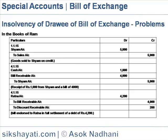In the books of Ram, the entry would be: on 1st January, Sam account debit to Sales account — goods sold to Sam on credit, Rs. 5,000.